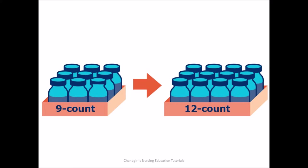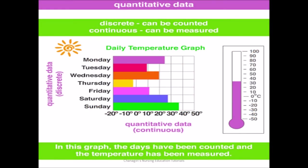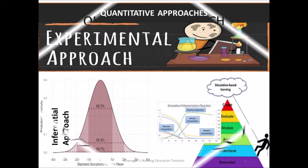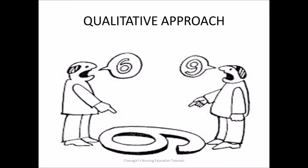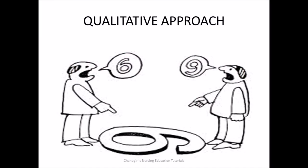Yes friends, here we can conclude that there are two main approaches to research: Quantitative Approach and Qualitative Approach. The Quantitative Approach involves the collection of quantitative data which are put to rigorous quantitative analysis in a formal and rigid manner. This approach further includes experimental, inferential and simulation approaches to research. Meanwhile, the Qualitative approach uses the method of subjective assessment of opinions, behavior and attitudes.